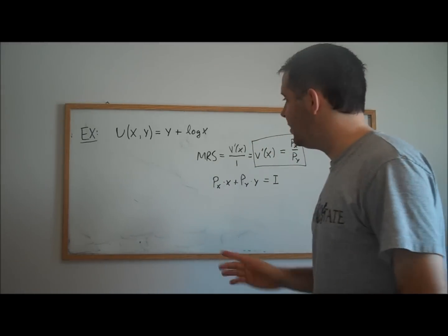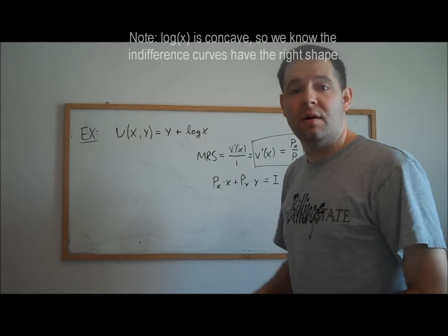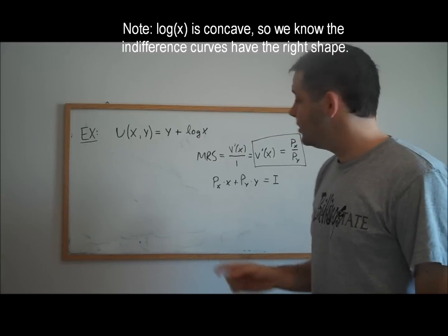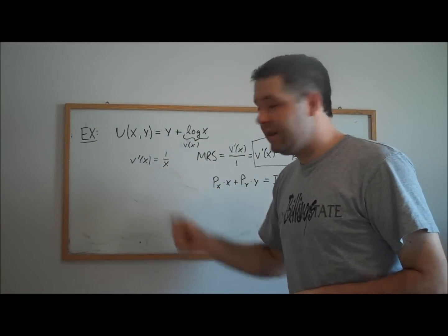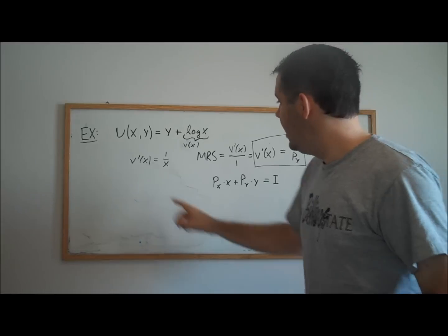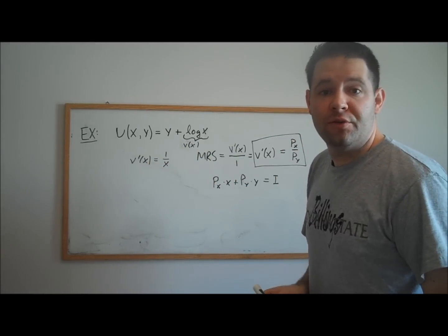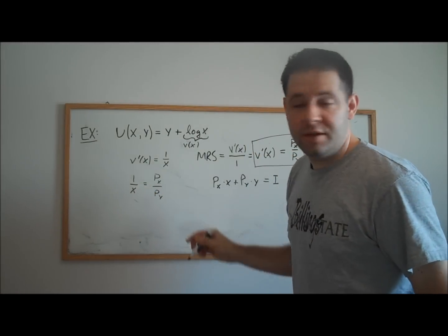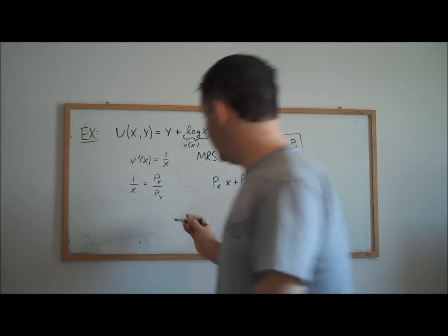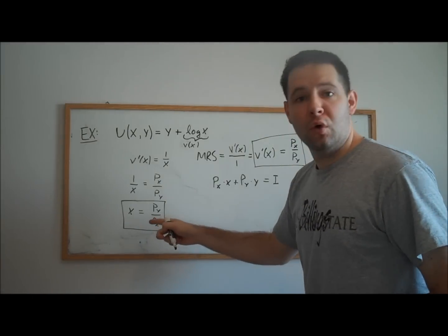Okay, so let's do an example with the log of x as our function for v of x. If we take the derivative of our v of x term, in this case it's going to be 1 over x. And remember, from before, that's going to equal our marginal rate of substitution. We set the marginal rate of substitution equal to the price ratio. Invert and multiply. And there's our demand curve for good x.